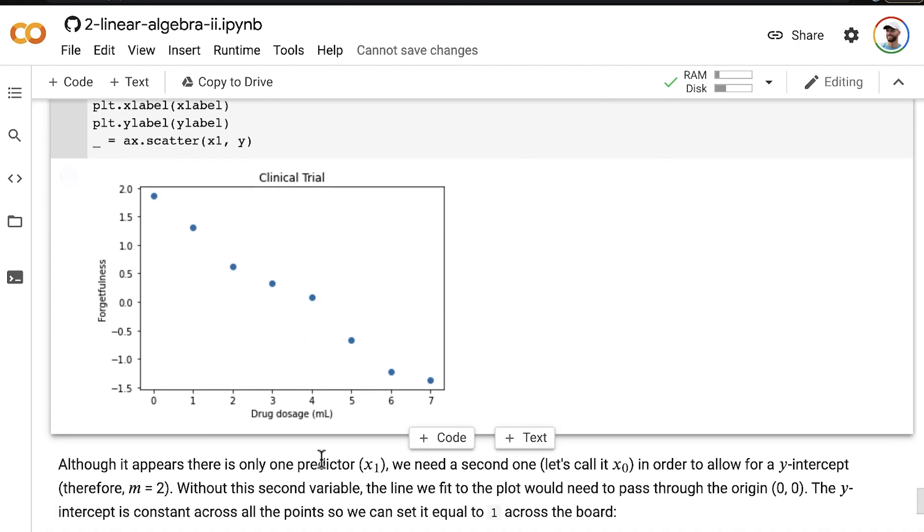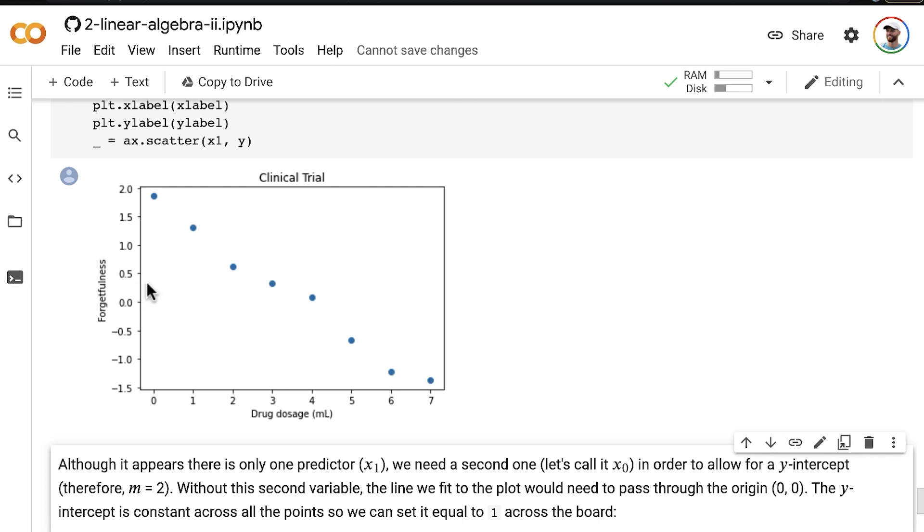Although it appears there is only one predictor here, if we want to fit a line to these points, we do need a second one, which I'll call X0 in order to allow for the y-intercept. Therefore, our number of columns m is equal to two. Our number of rows n is equal to eight. So we have eight data points. Having this y-intercept allows the mean outcome to be away from zero. If you didn't have a y-intercept, you'd be forced to have your line intercept the y-axis here at zero. But as we can tell, the y-intercept is closer to two. So we definitely want, almost always, it would be very unusual to not have a y-intercept in your model.